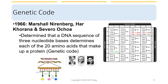In 1966, it was determined that a DNA sequence of three nucleotide bases determines each of the 20 amino acids that make up a protein, after that DNA code is transcribed into the messenger RNA code. In the messenger RNA code, each amino acid is designated by a triplet of nucleotides called a codon.